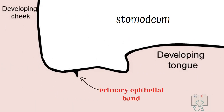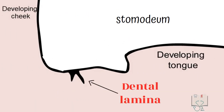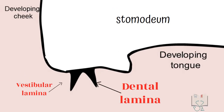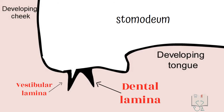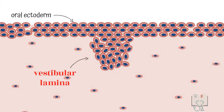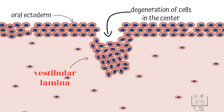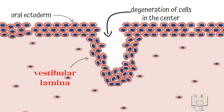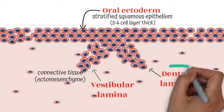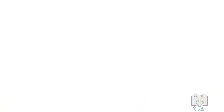The dental lamina is on the inner side towards the tongue, and the vestibular lamina is on the outer side. The word lamina means layer or plate. Just like the primary epithelial band, both these laminae are horseshoe shaped. The vestibular lamina, also called the lip furrow band, continues to grow deep into the connective tissue, delineating tooth-bearing areas from the lips and cheek. As it grows deeper, cells in the center undergo degeneration, forming the horseshoe-shaped sulcus called the vestibule.